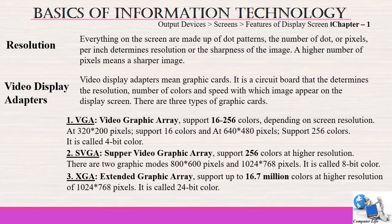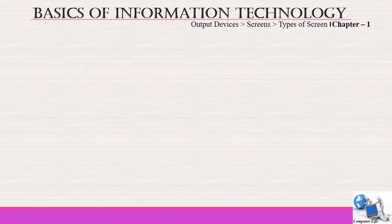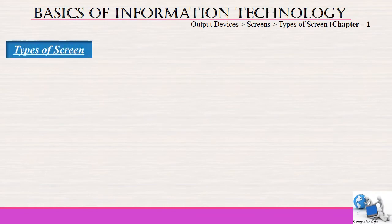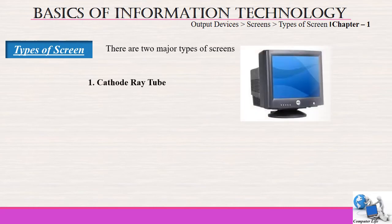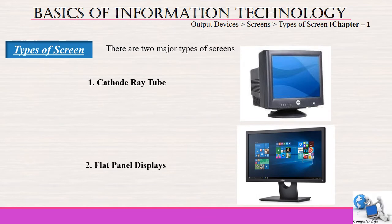XGA has high quality graphics that support our computer system and show a better, more clear picture. Now we will discuss types of screens. There are two types of screens: the first one is cathode ray tube and the next is flat panel displays. We will discuss all these screens one by one.